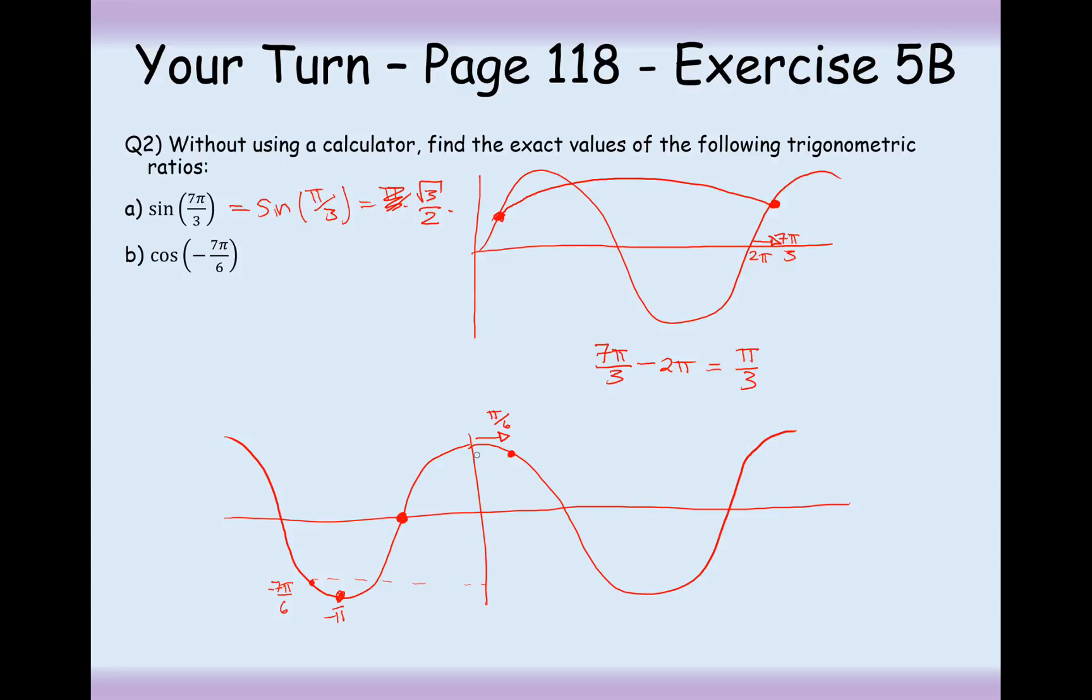Therefore, the answer to cos(-7π/6) is going to be the negative of cos(π/6).